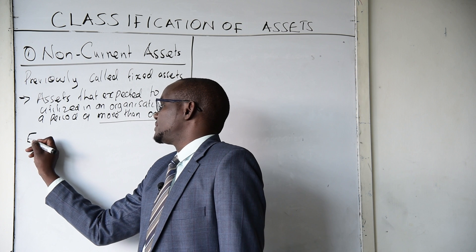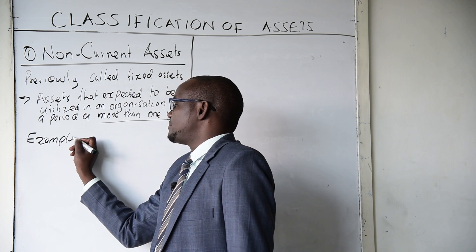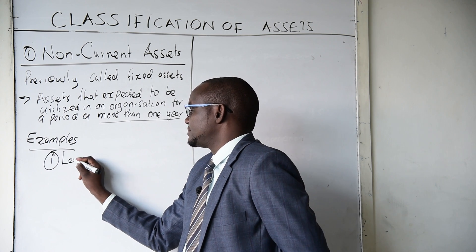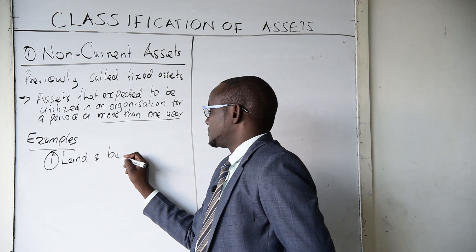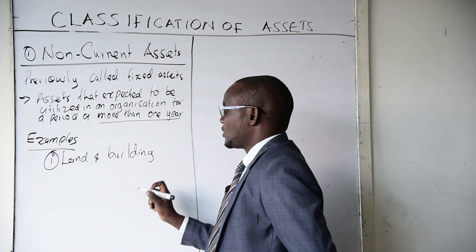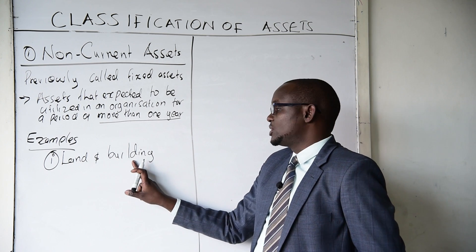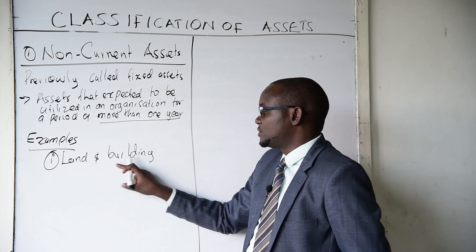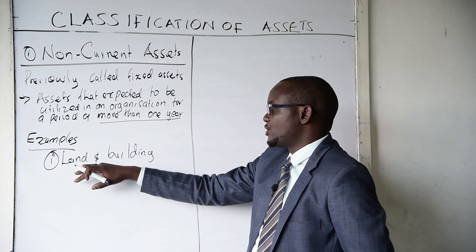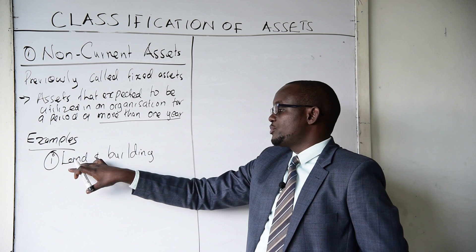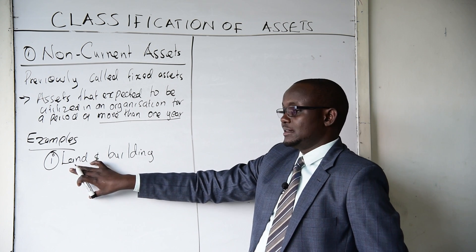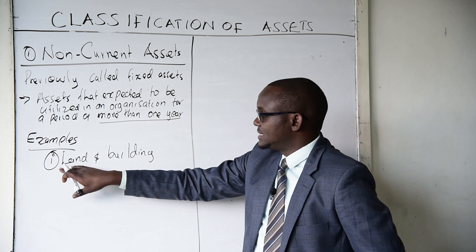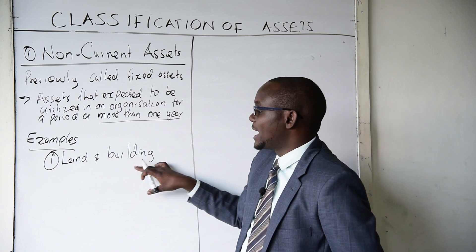Examples of non-current assets: one, we have land and building. We combine land and building because buildings do not exist where there is no land — most of the time buildings are attached to the land. Even though when doing financial reporting you can report land separately and land with building separately, we majorly combine the two and state the value of land and building.